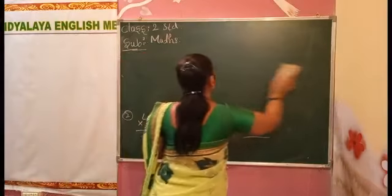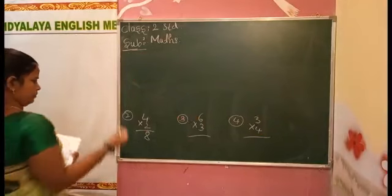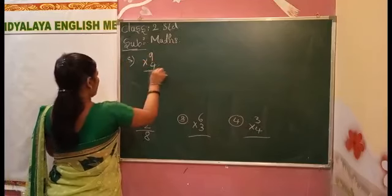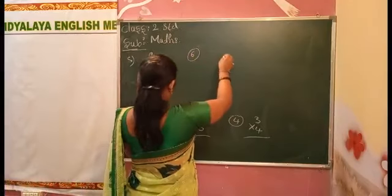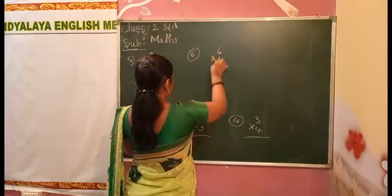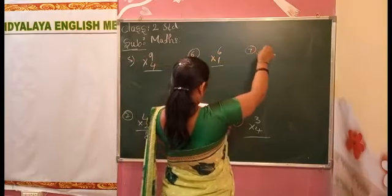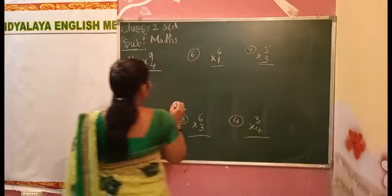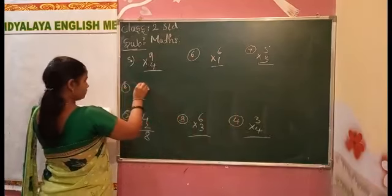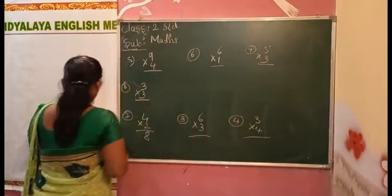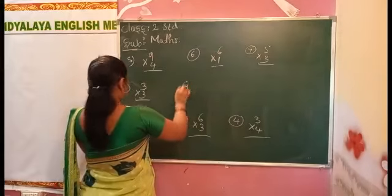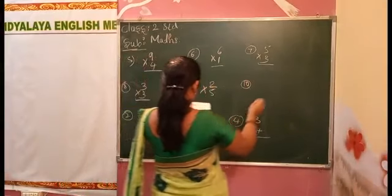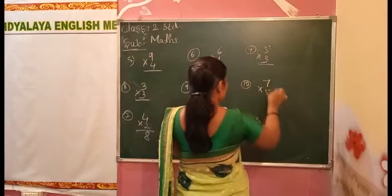Fourth one, fifth one, nine fours. Sixth one, six ones. Seventh one, five threes. Eighth one, three threes. Ninth one, two fives. Tenth one, seven fives.